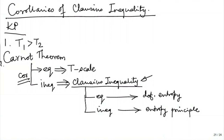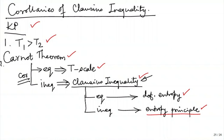We said that we started with Kelvin-Planck, hierarchy of temperature, Carnot theorem. The equality corollary of Carnot theorem gave us the idea of thermodynamic temperature scales; the inequality led us to the Carnot inequality. Then the equality part of Carnot inequality gave us the definition of entropy. Now we have to complete this task before we go into the nitty-gritty of evaluating entropy, various types of processes, and then from there to property relations.